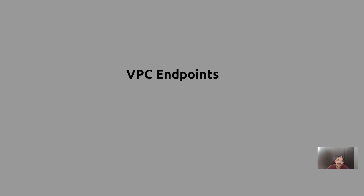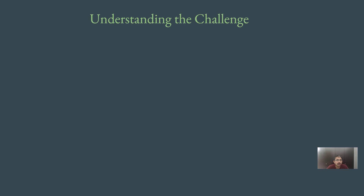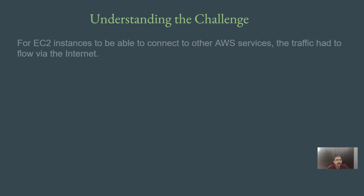Before we dive in, let's look into the challenge that organizations used to face before this feature was introduced, so we can understand what benefit it provides. For EC2 instances to communicate with other AWS services — and AWS has more than 200 services right now — the traffic had to flow via the internet for inter-service communication.